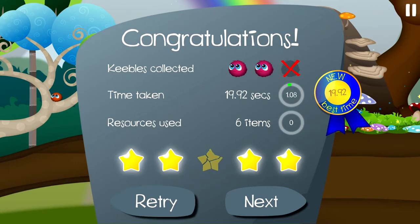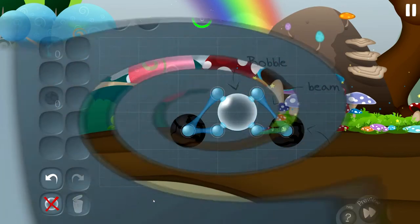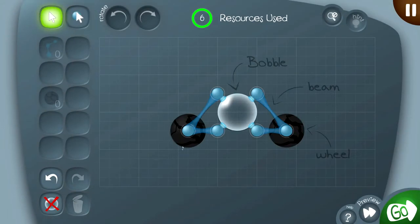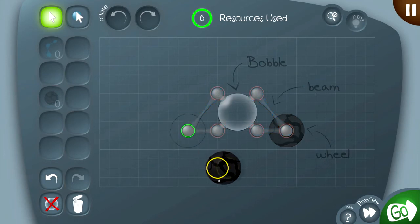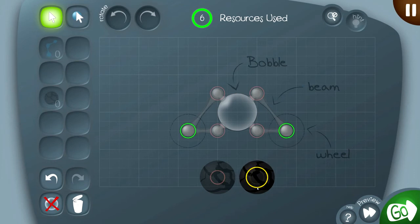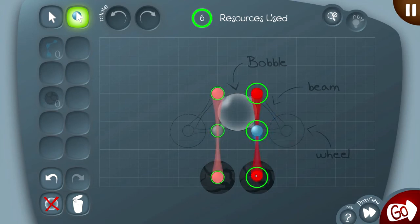Let's go back though, and see if we can work out how to get that last Keeble. Something that we might think of is perhaps we need to lift the vehicle up. So let's pop the wheels underneath the bobble, and we're going to need to stretch these beams down to reach it.